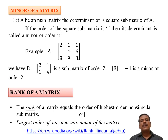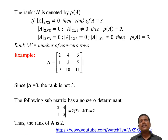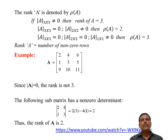The rank of a matrix: the largest order of any non-zero minor of the matrix, or equivalently the order of the highest order non-singular sub-matrix — that is called the rank of a matrix. In echelon form, the rank of a matrix is the number of non-zero rows of the upper triangular form of the matrix.